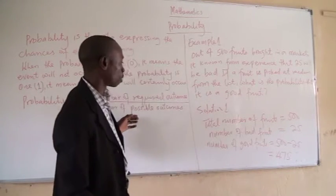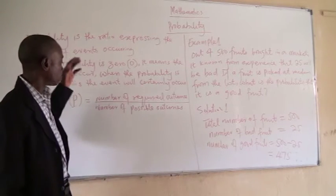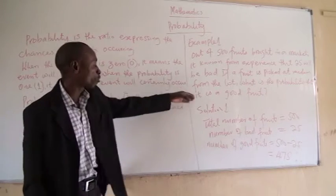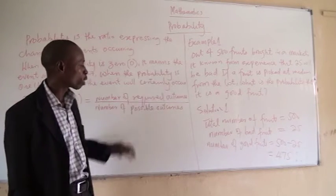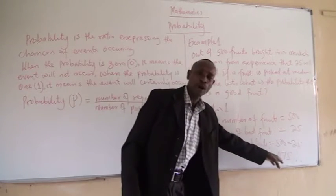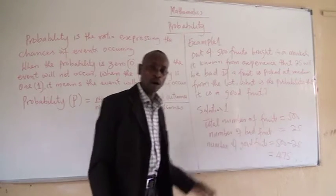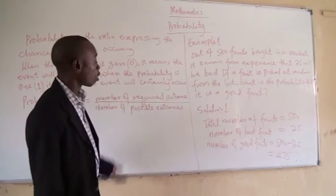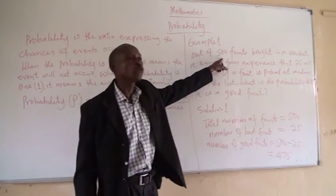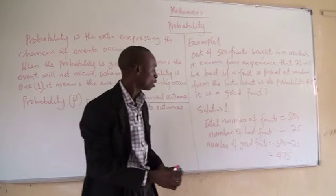We now fall back to the formula. The formula is: probability is given by the number of required outcomes. The required outcome now is good fruit, and we have four hundred and seventy-five good fruits, all over what is possible. Because you cannot have more than five hundred, what is possible is five hundred.